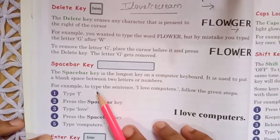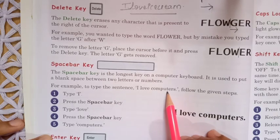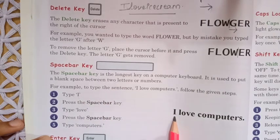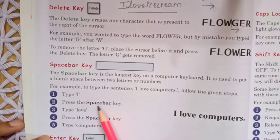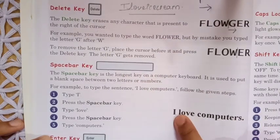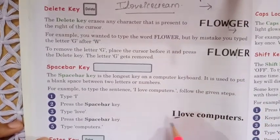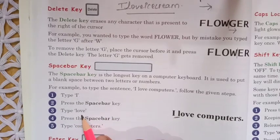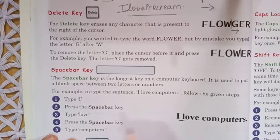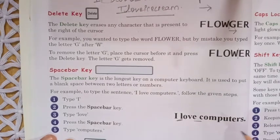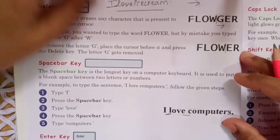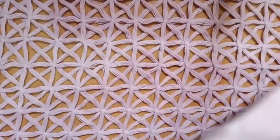For example, to type the sentence 'I love computers': first type I, then press the space bar key — a blank space appears. Then type 'love', after that again press the space bar key, and continue typing the sentence properly this way.